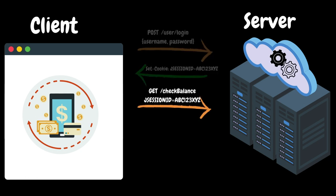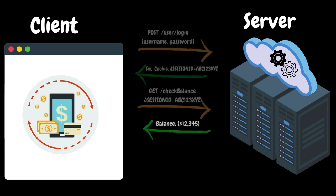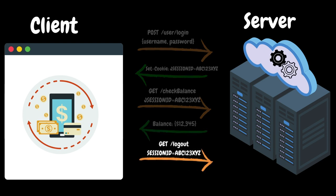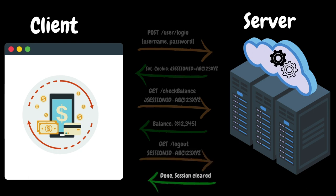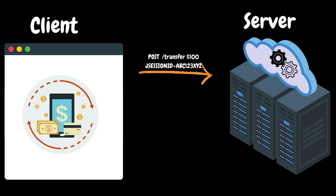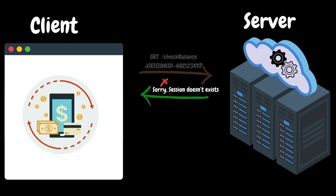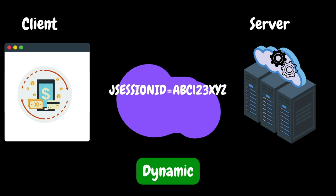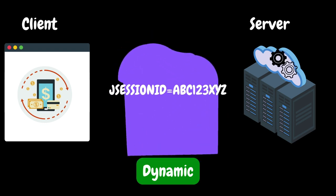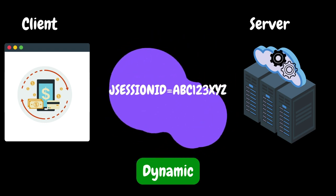Next, the client sends a request for account balance along with the session ID. Then the server verifies the session ID. If it is a valid session ID, then it returns the account balance information. Once the user decides to log out, he will send a logout request along with the user session ID. Then the server will clear the session in memory and send confirmation back to the client. If the user browser sends a request with the same session ID afterwards, the server will reject it as the session was already closed. So in this example, the session ID is dynamic in nature — for all subsequent new communications, the server will create a new session and session ID.